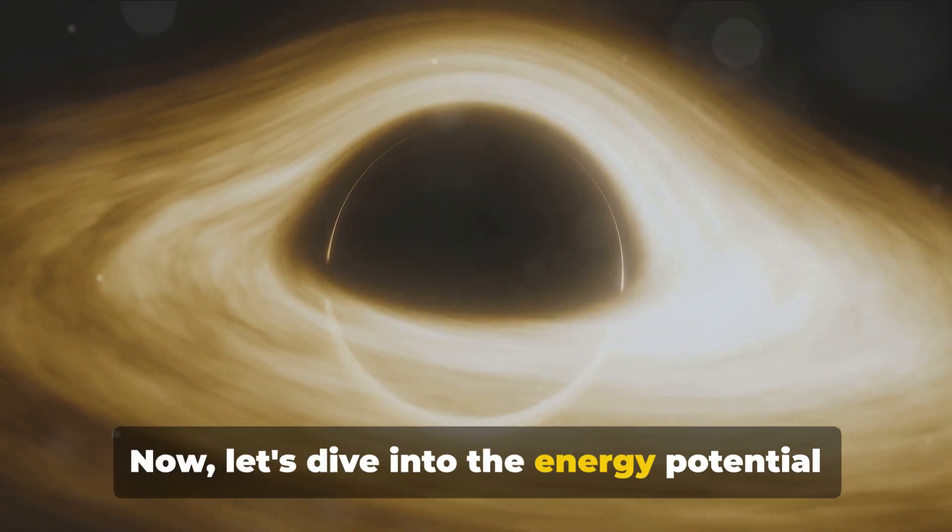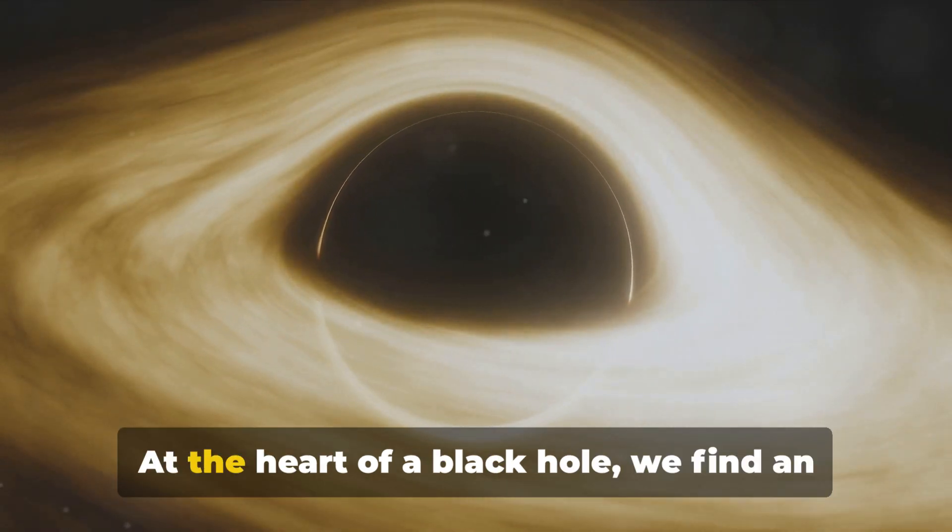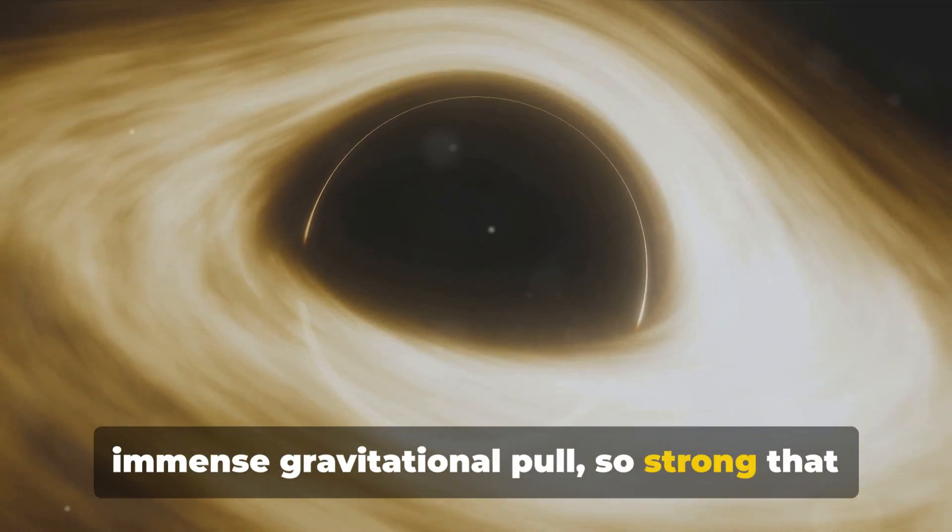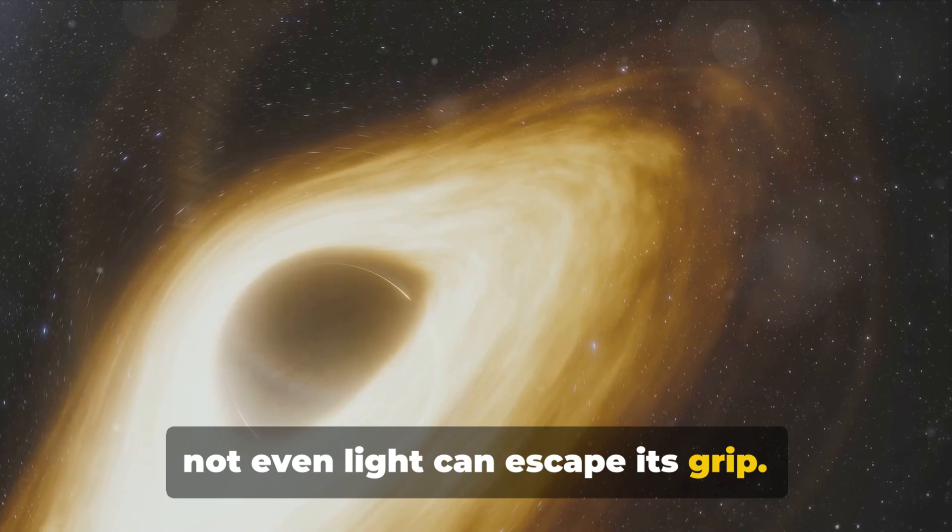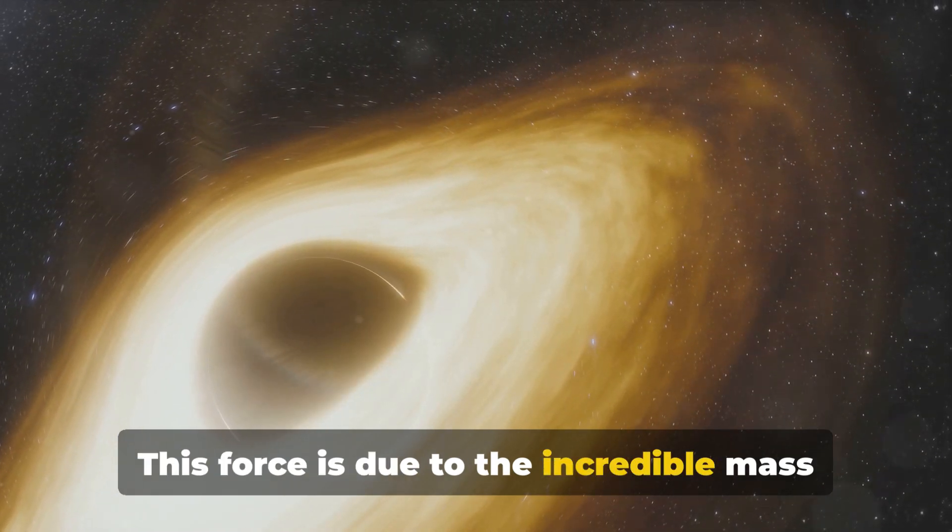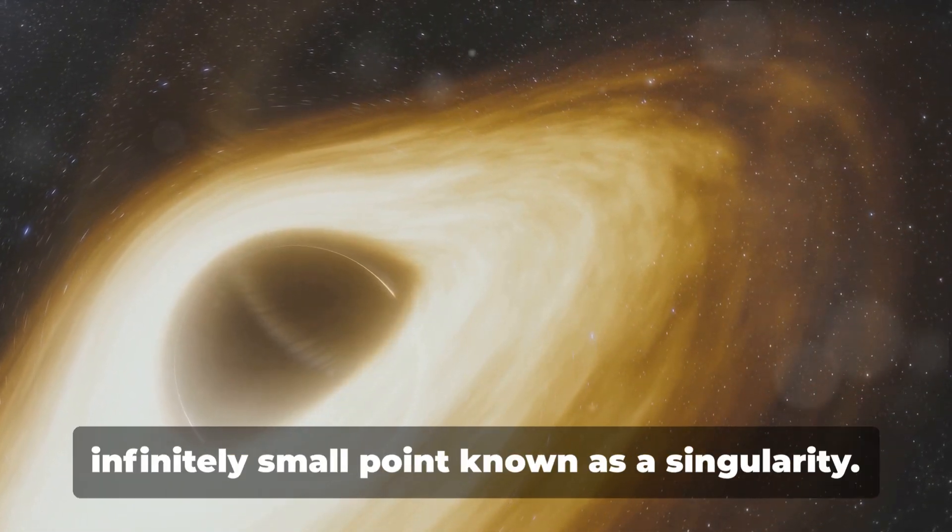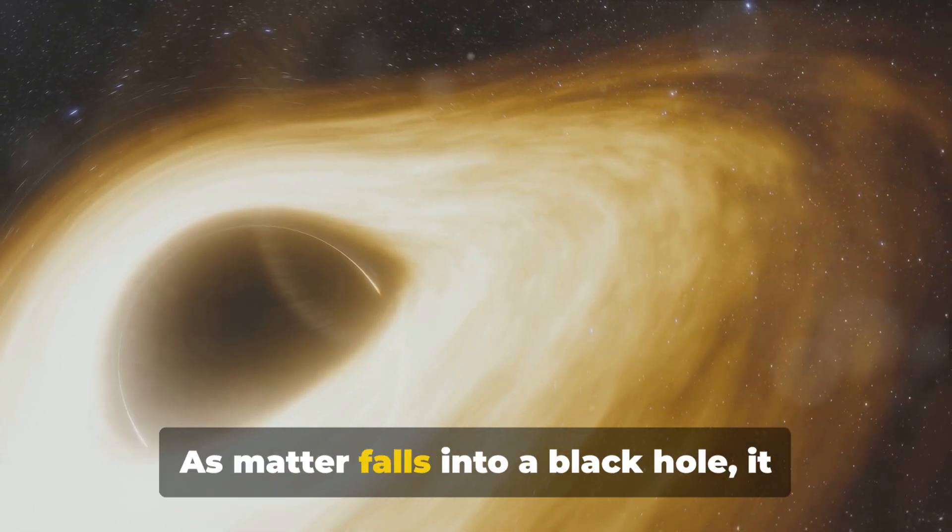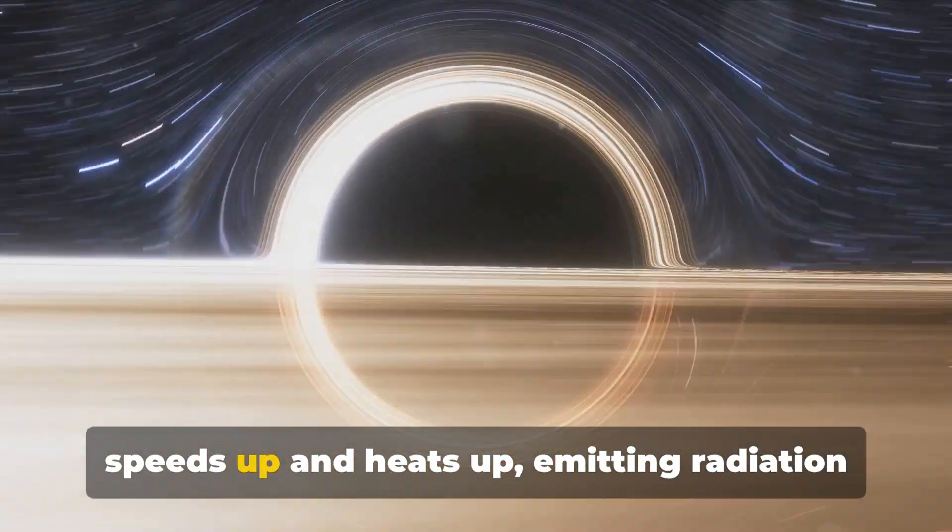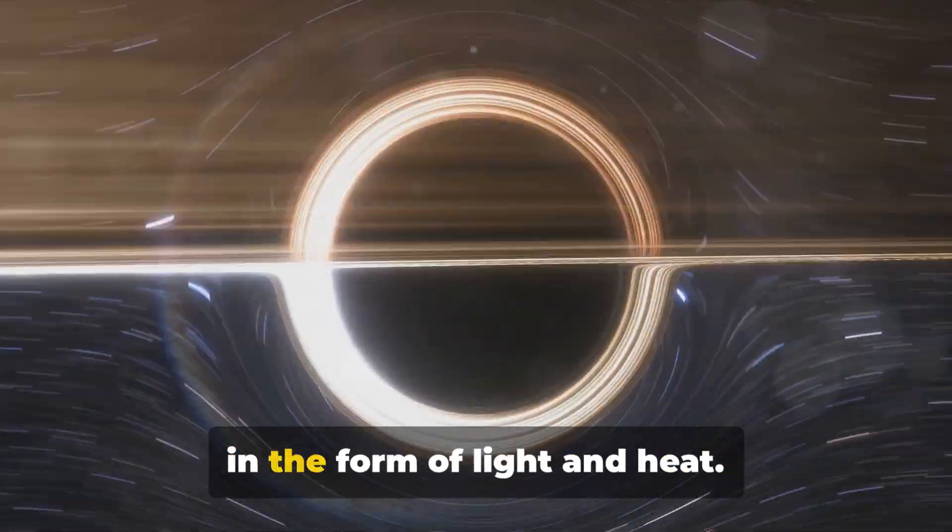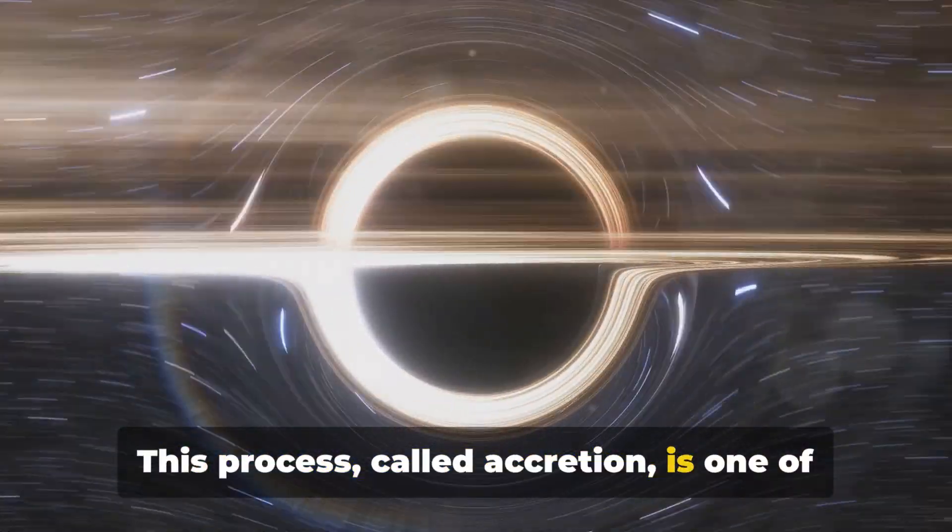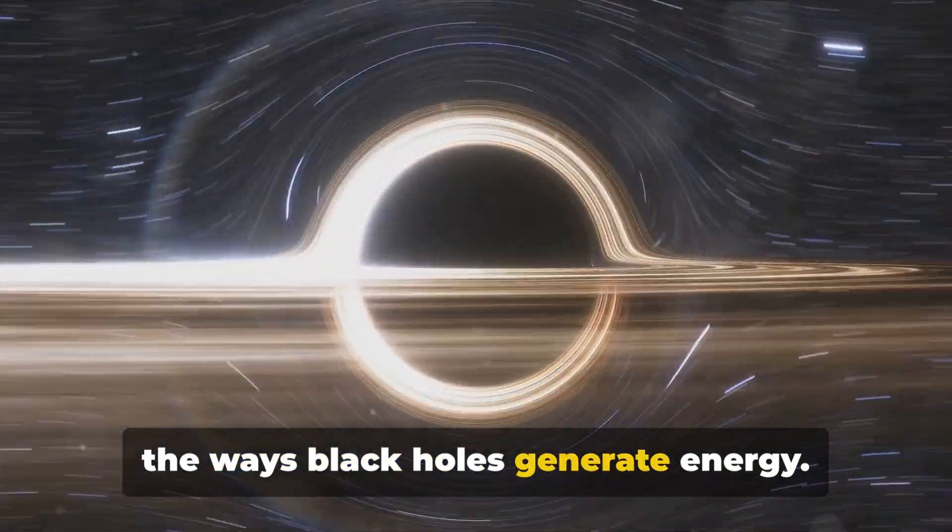Now let's dive into the energy potential of a black hole. At the heart of a black hole we find an immense gravitational pull, so strong that not even light can escape its grip. This force is due to the incredible mass of a black hole, compressed into an infinitely small point known as a singularity. As matter falls into a black hole, it speeds up and heats up, emitting radiation in the form of light and heat. This process, called accretion, is one of the ways black holes generate energy.